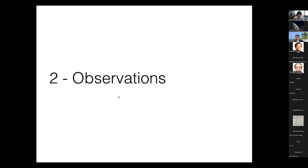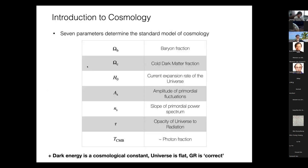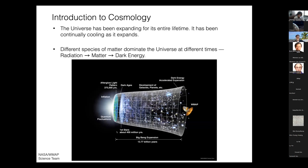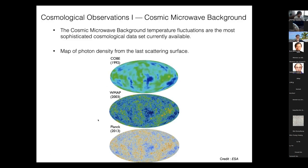That was my 20-minute introduction to the standard model of cosmology. Now I'm going to talk about the observations used to test that model. I'll discuss three different observations and argue that the standard model of cosmology is extremely successful — but in the last section, I'll suggest that as the data improves, the standard cosmological model is running into tensions with observations, which may indicate that our description of the universe is incomplete.